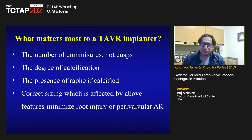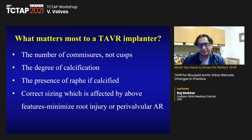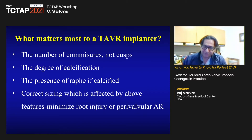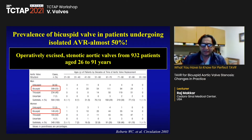What matters to the TAVR implanter is not just the number of cusps, but also the number of commissures, the degree of calcification, the presence of raphae — especially if they are calcified — and correct sizing, which depends on all of the features mentioned above, in order to minimize aortic root injury and perivalvular aortic regurgitation.